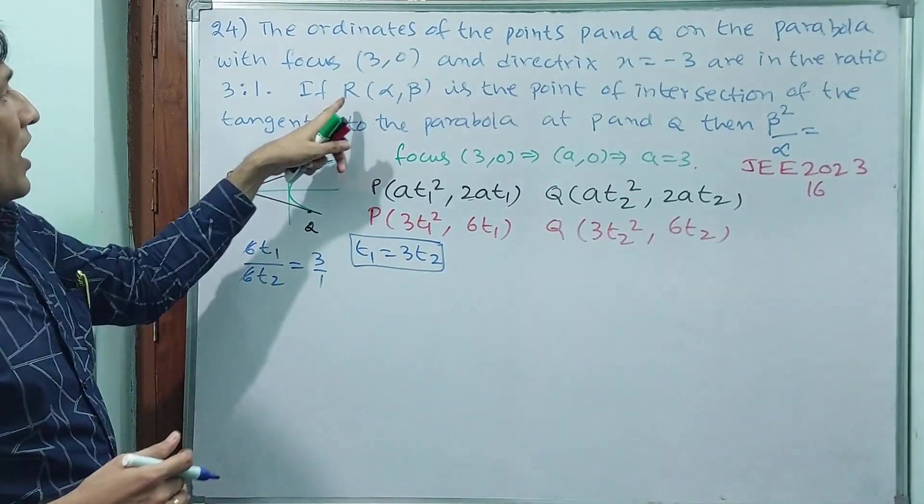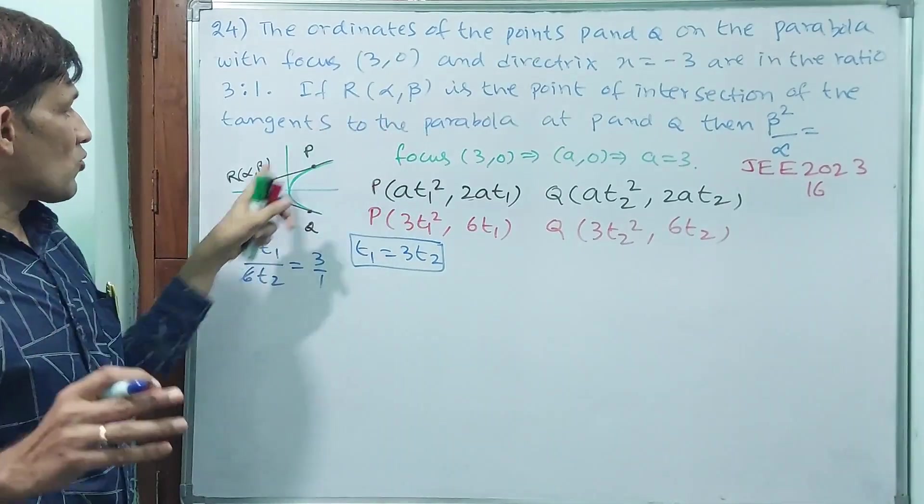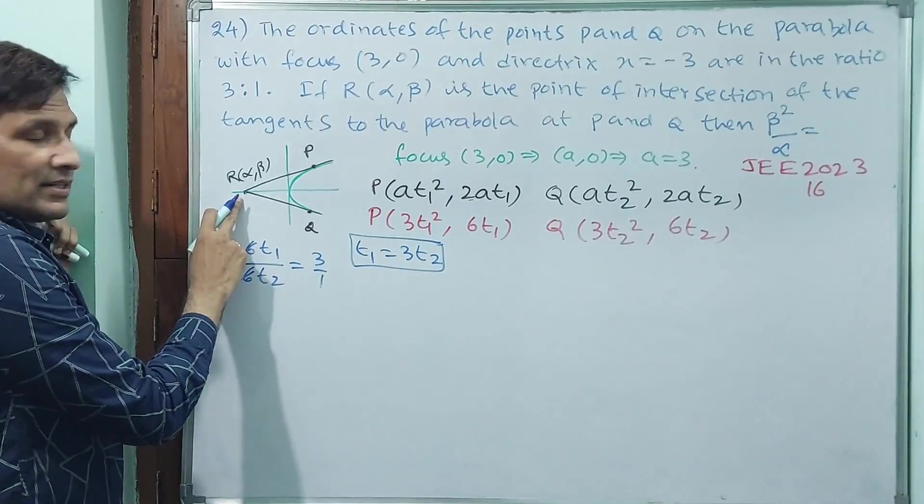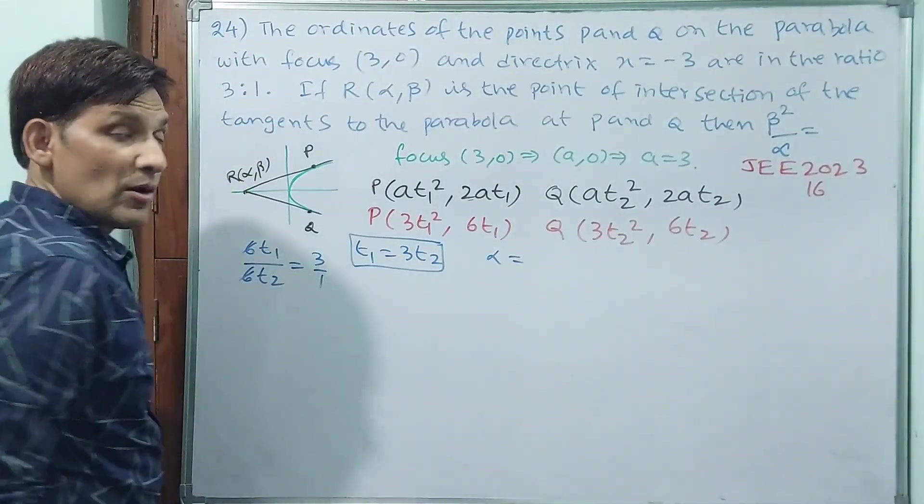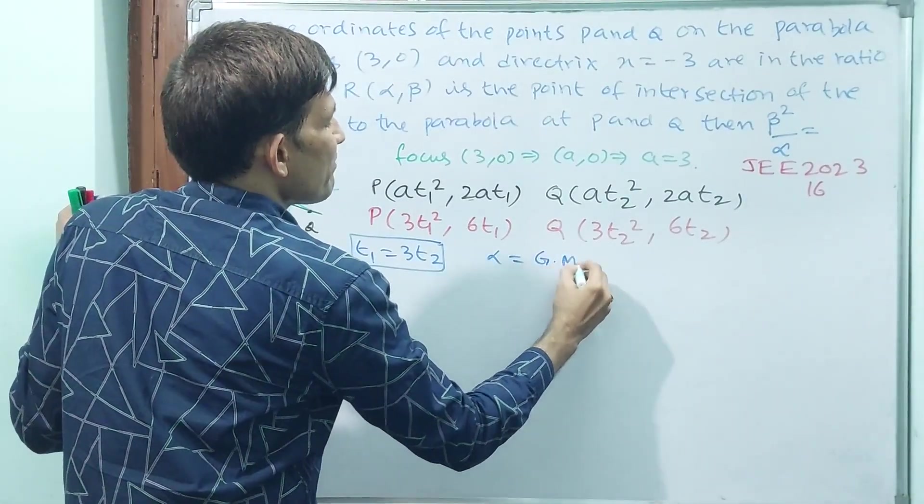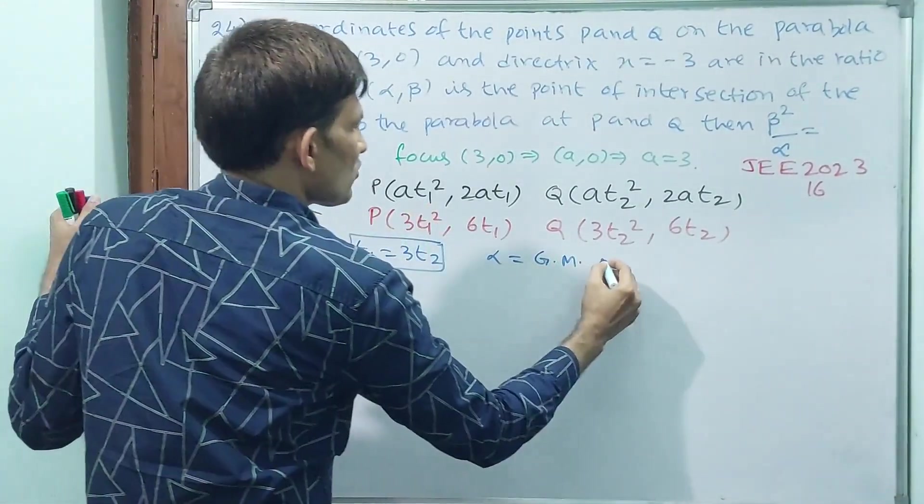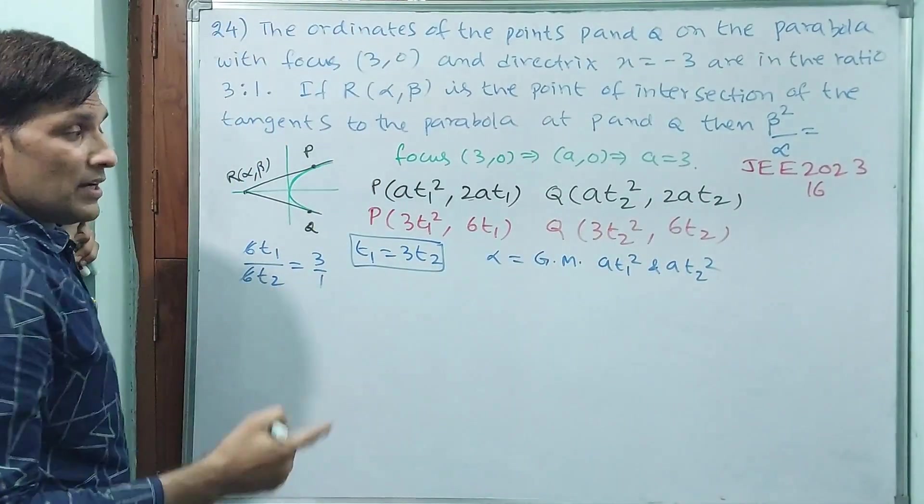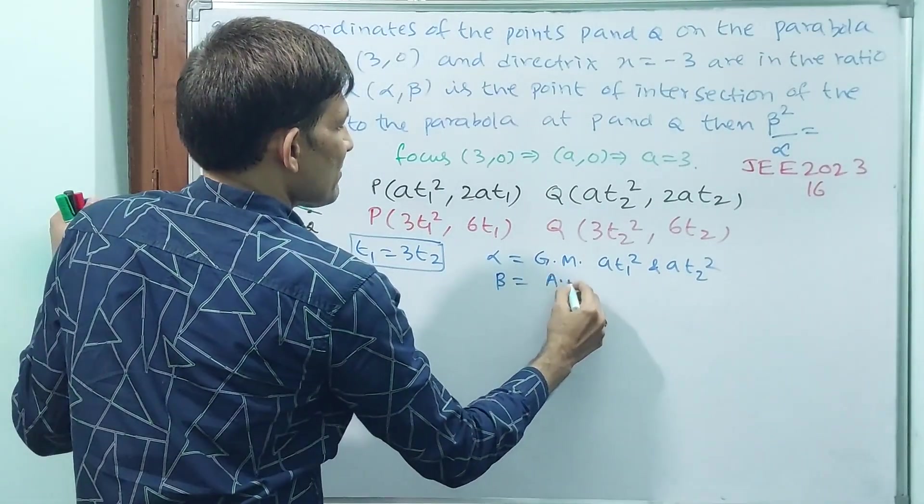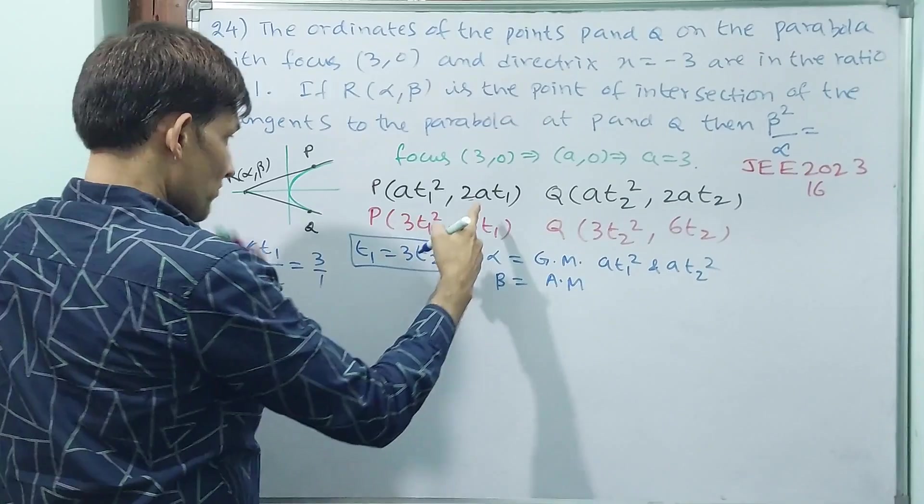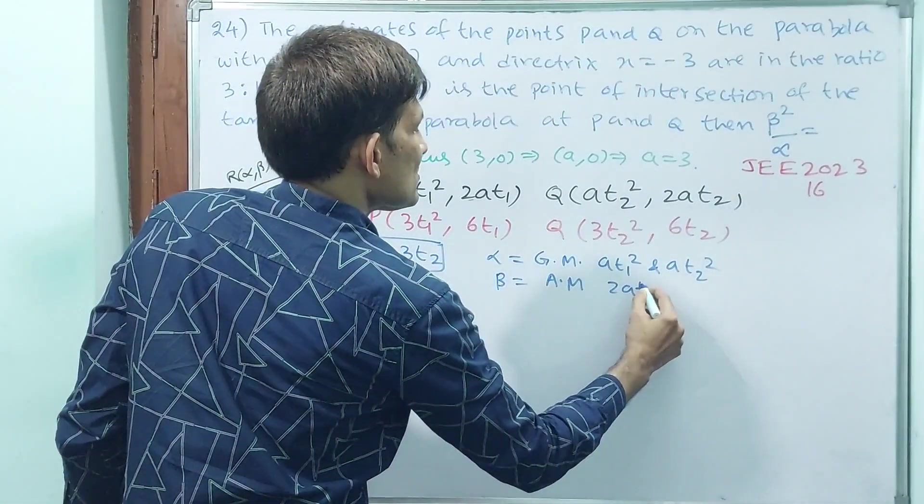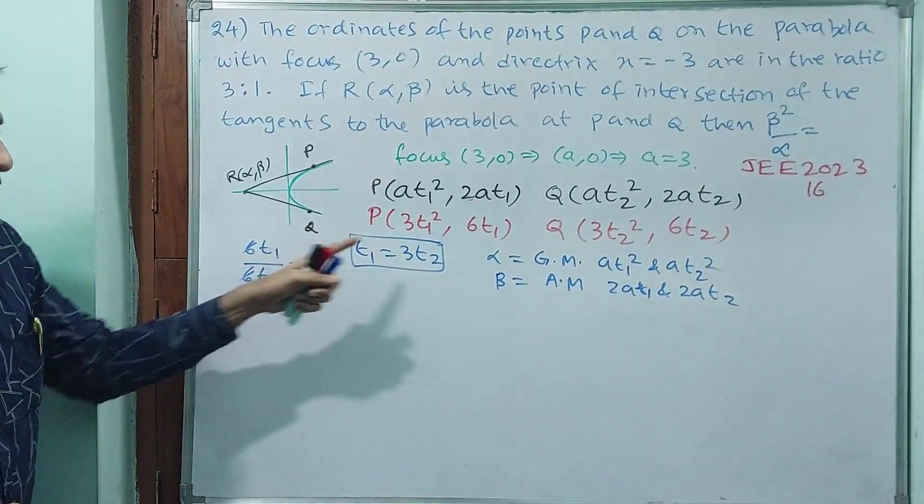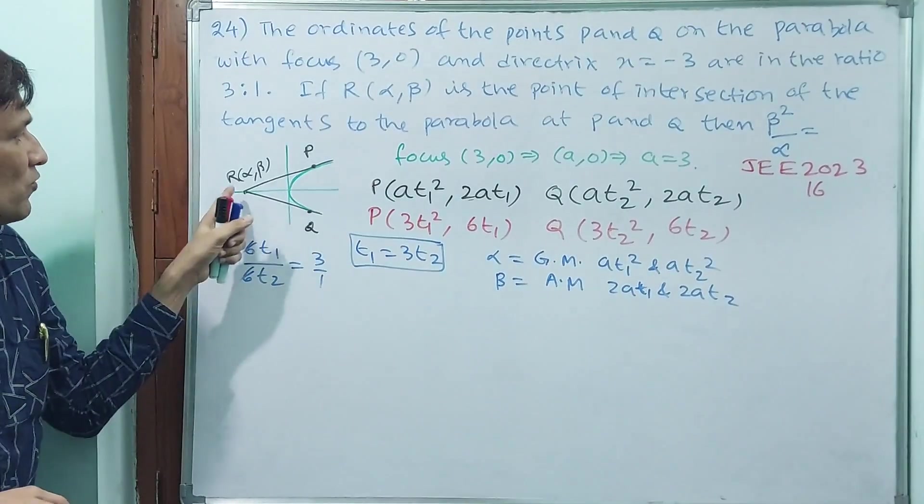Now, what else they have given? R is (alpha, beta). Here, you have to know one concept for this question. When these tangents meet at one point, then alpha will be geometric mean of at₁² and at₂². Then what about beta? Beta will be arithmetic mean of 2at₁ and 2at₂. That means X coordinates geometric mean, Y coordinates arithmetic mean, you have to do for getting this point.